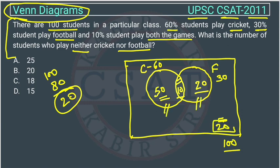These are 20 students who are not playing cricket and not playing football. So the answer is option B. These are easy questions — Venn diagram questions are easy, so you should always attempt them.